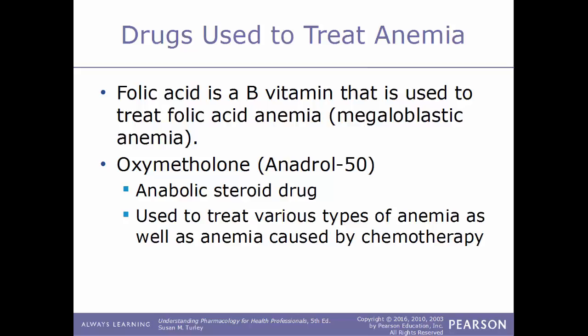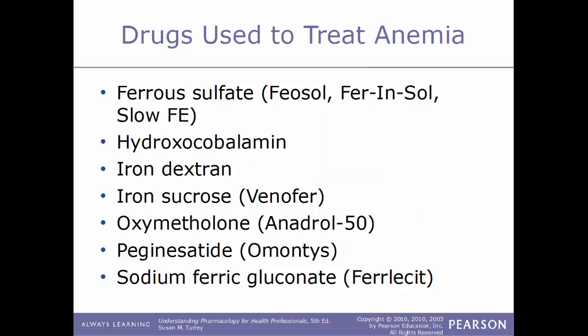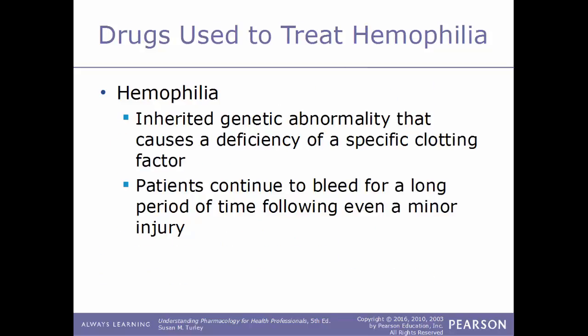Additional examples of drugs used to treat anemia: Aranesp, Epogen or Procrit, Mircera, epoetin beta methoxy polyethylene glycol also known as Mircera, ferrous fumarate also known as Ferro-Sequels, ferrous gluconate also known as Fergon, ferrous sulfate also known as Feosol, Fer-In-Sol, or Slow FE, hydroxocobalamin, iron dextran, iron sucrose also known as Venofer, oxymetholone also known as Anadrol-50, peginesatide acetate also known as Omontys, and sodium ferric gluconate also known as Ferrlecit.